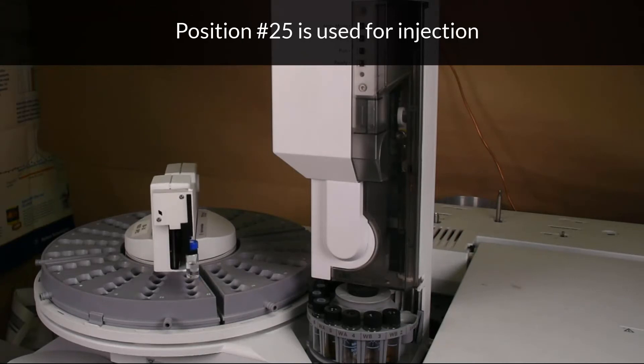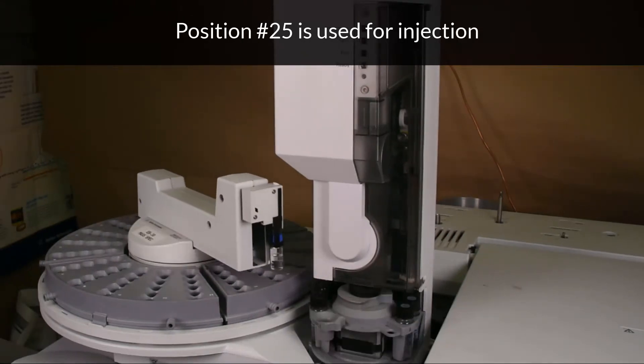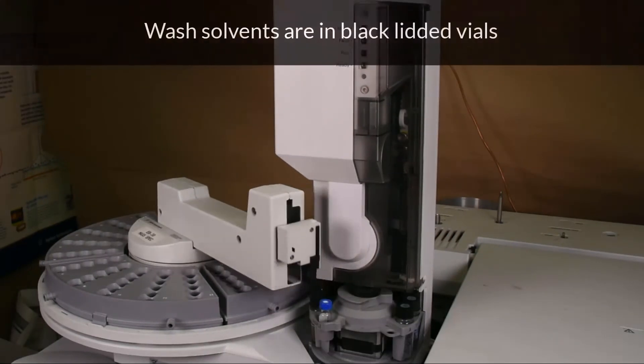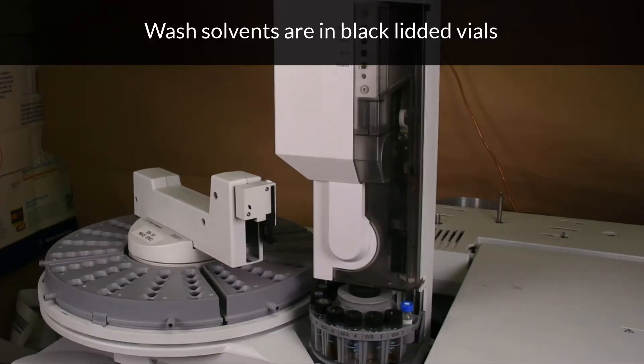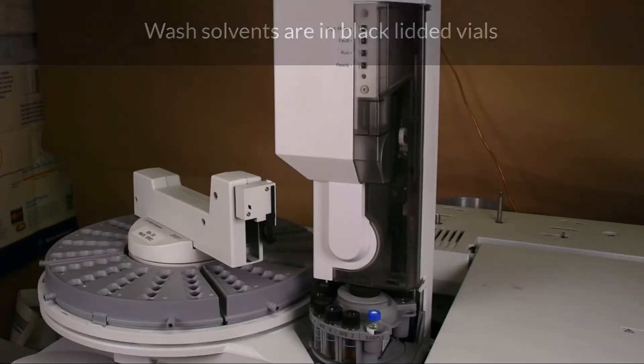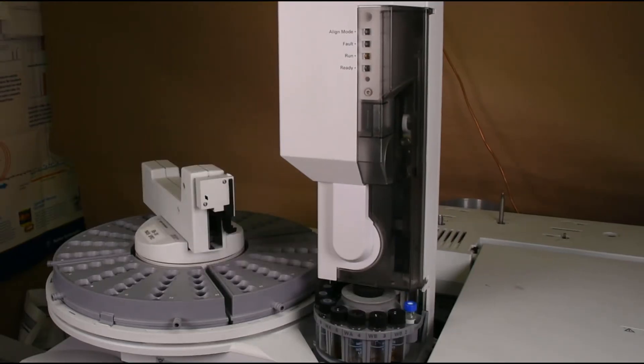The auto-sampler selects a vial and positions it under the injection needle. The auto-sampler proceeds with washing stages before it injects the sample. The needle withdraws sample at set volumes for injection.